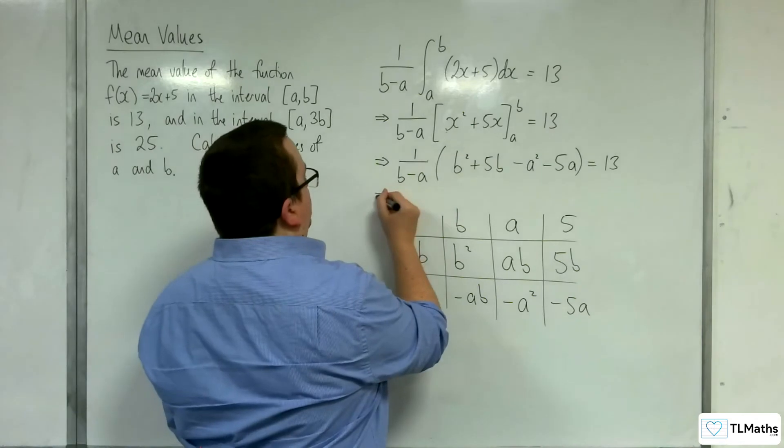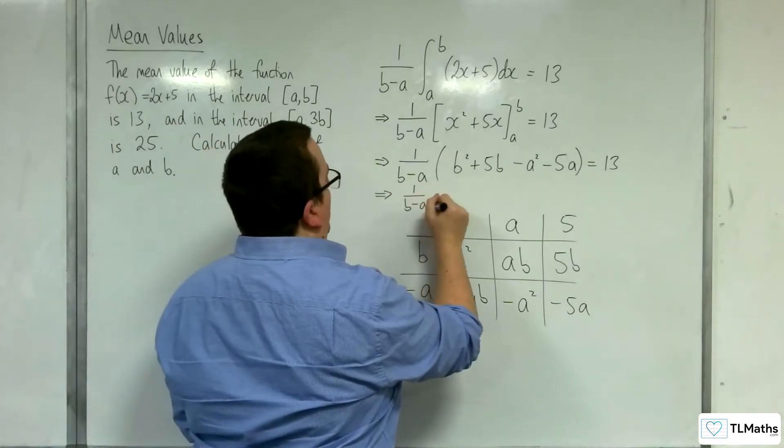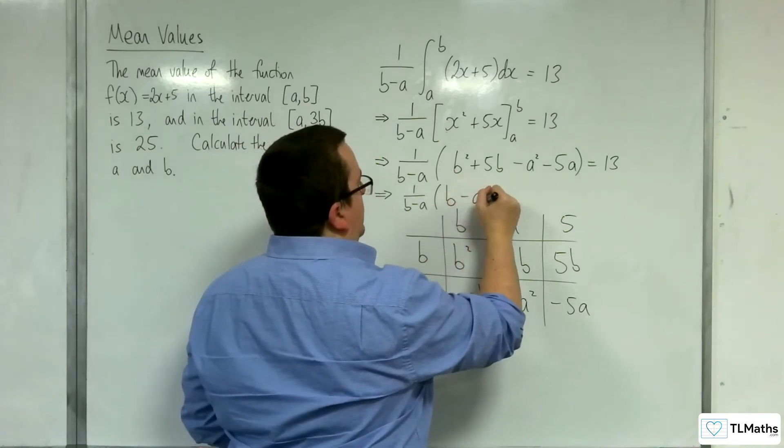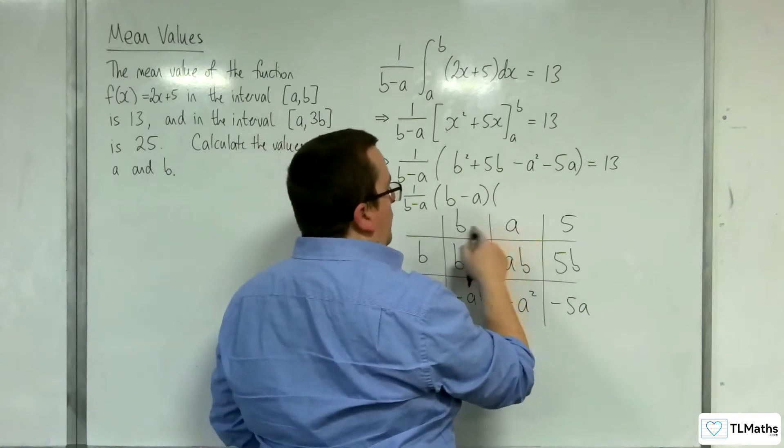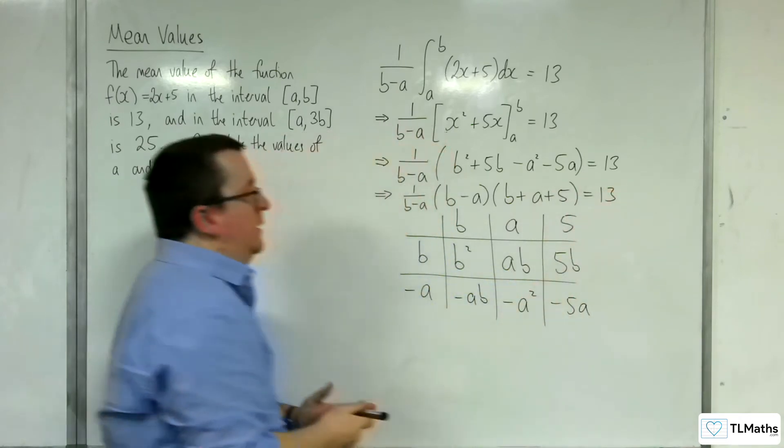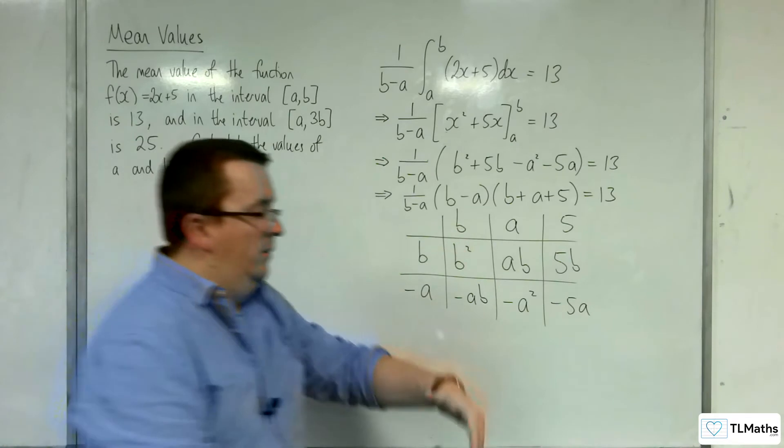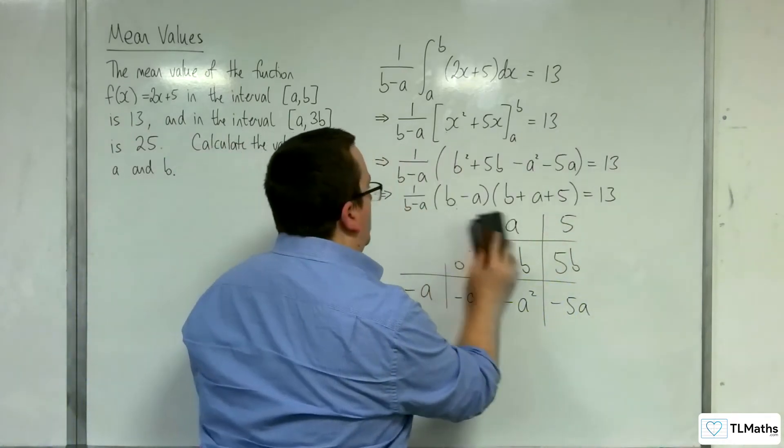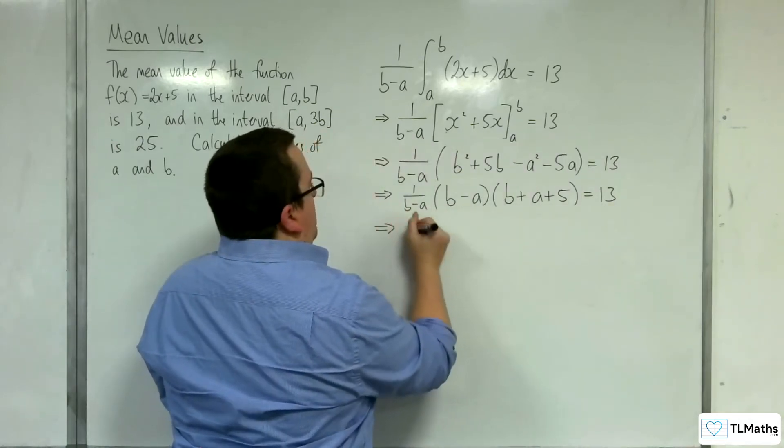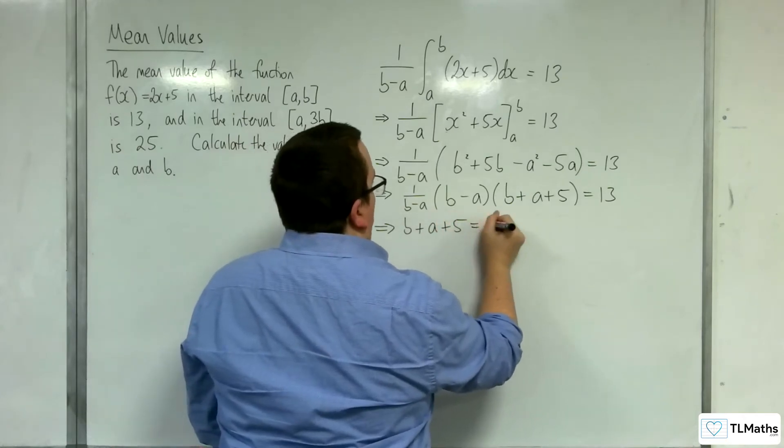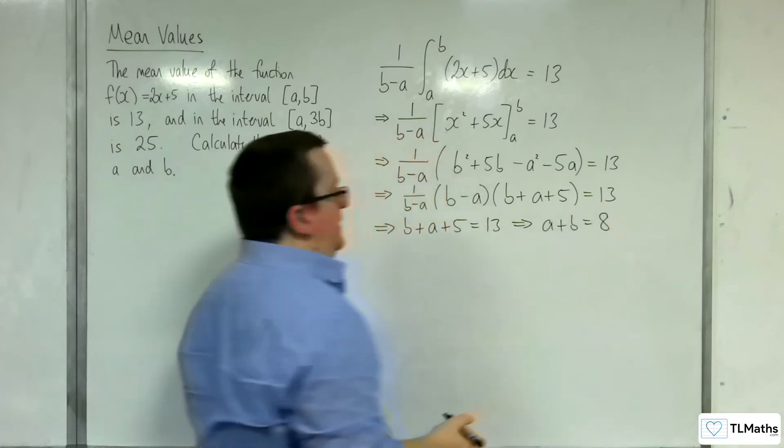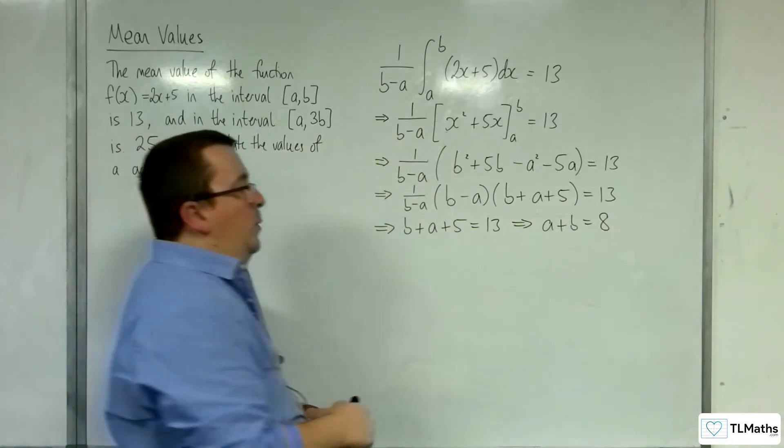So that means that we have 1 over (b - a) times (b - a), which I've just shown as a factor, times by (b + a + 5). b + a + 5 equals 13. So conveniently, the (b - a)'s cancel, leaving me with b + a + 5 equals 13. So a + b must be equal to 8. And that's going to be equation number 1.